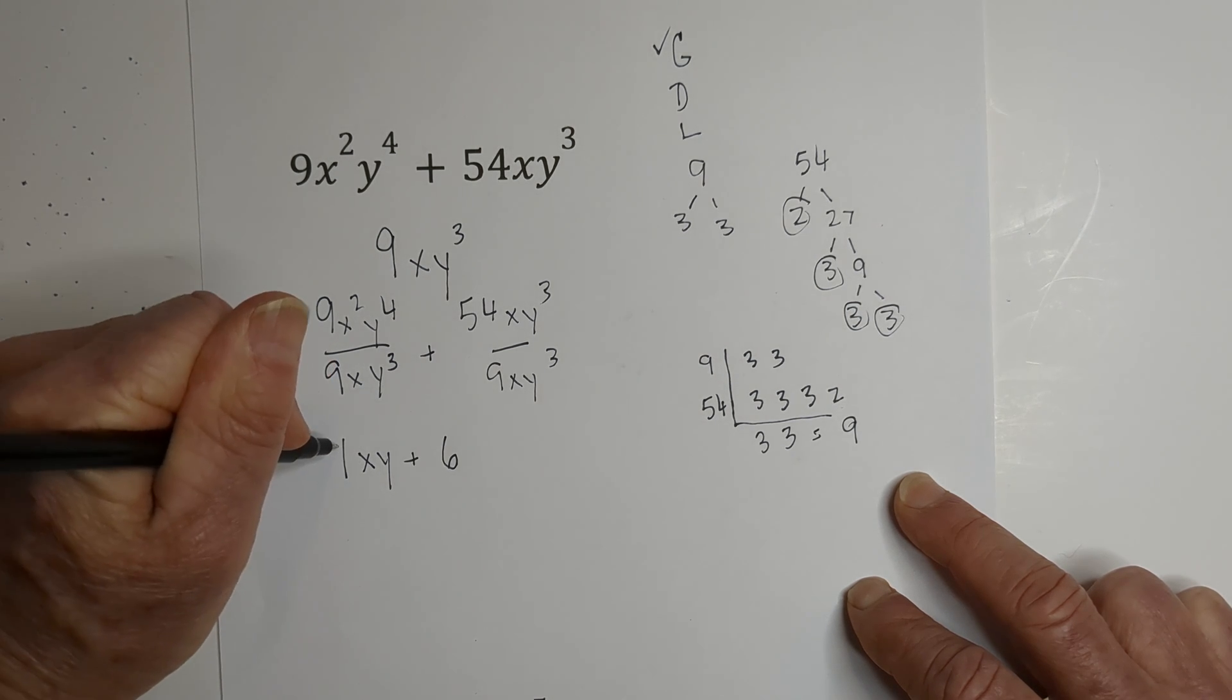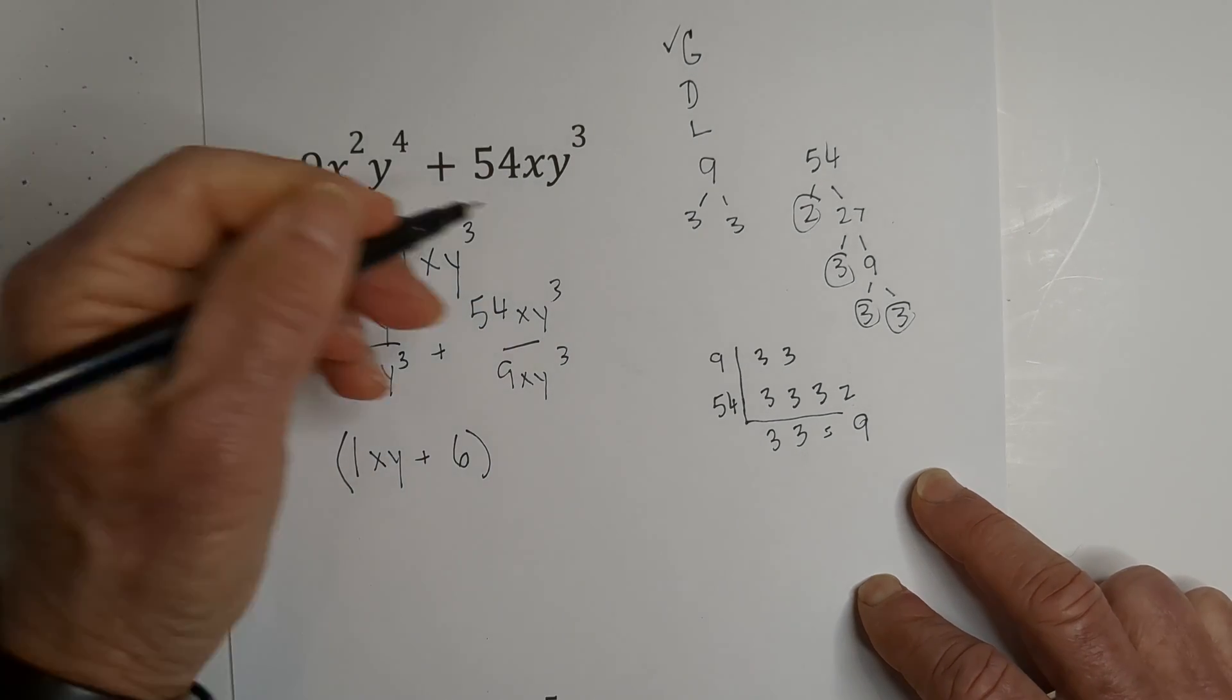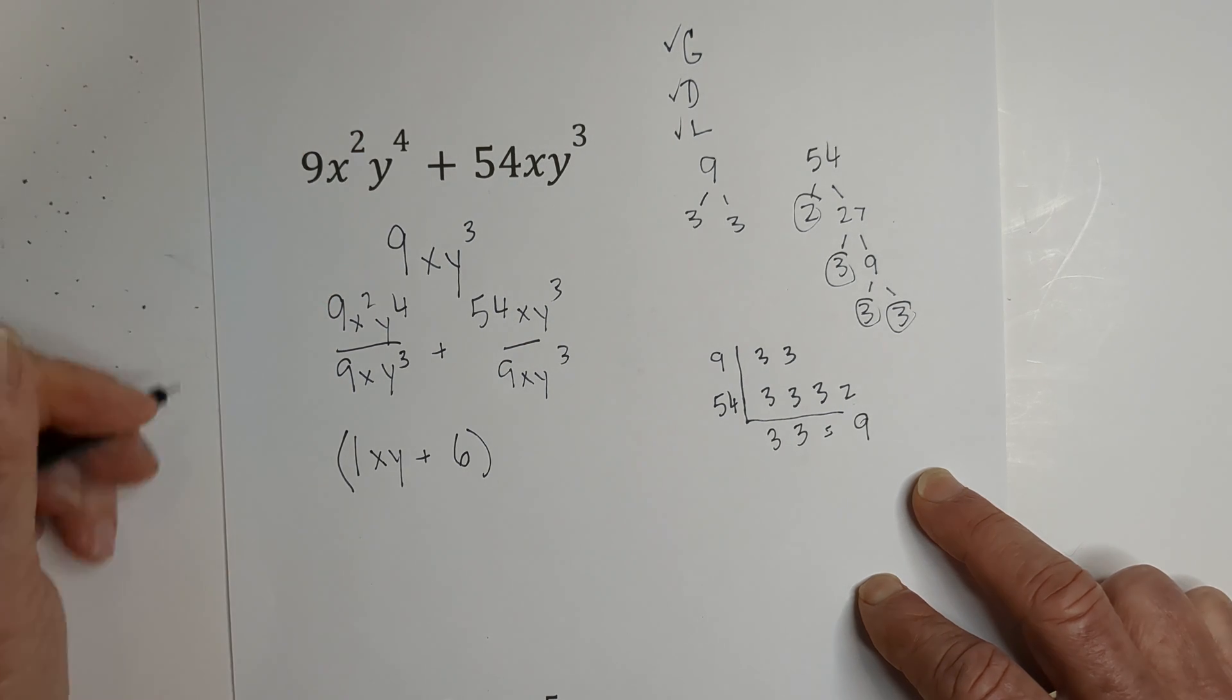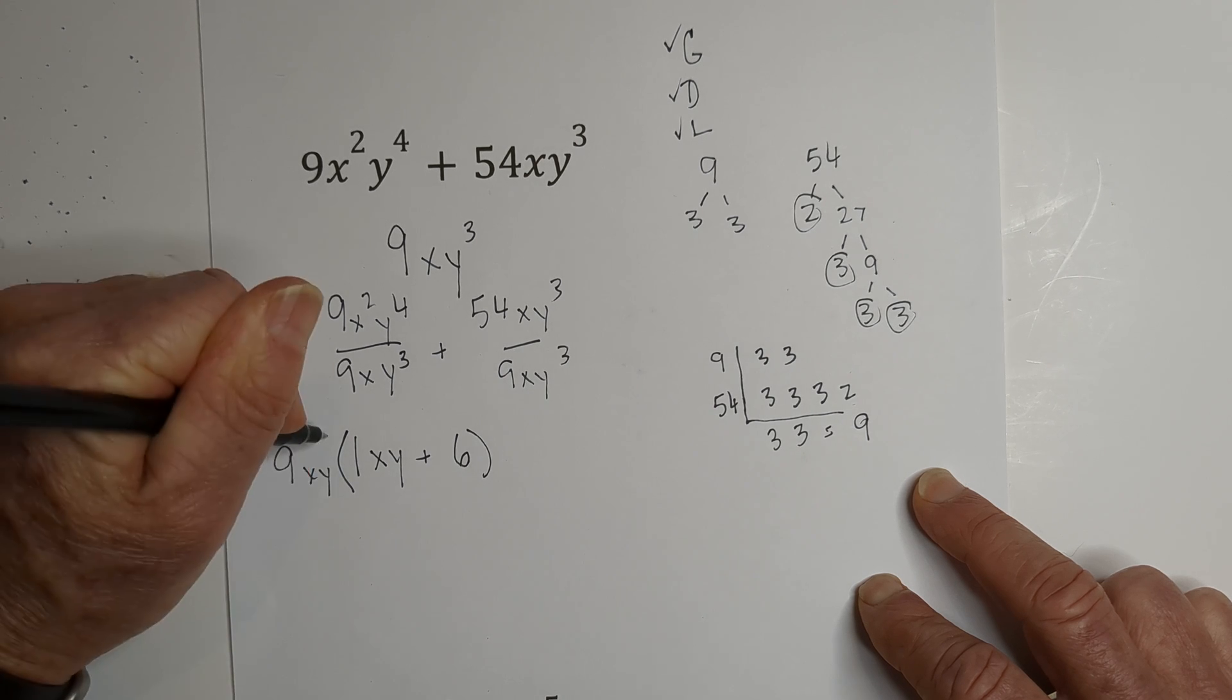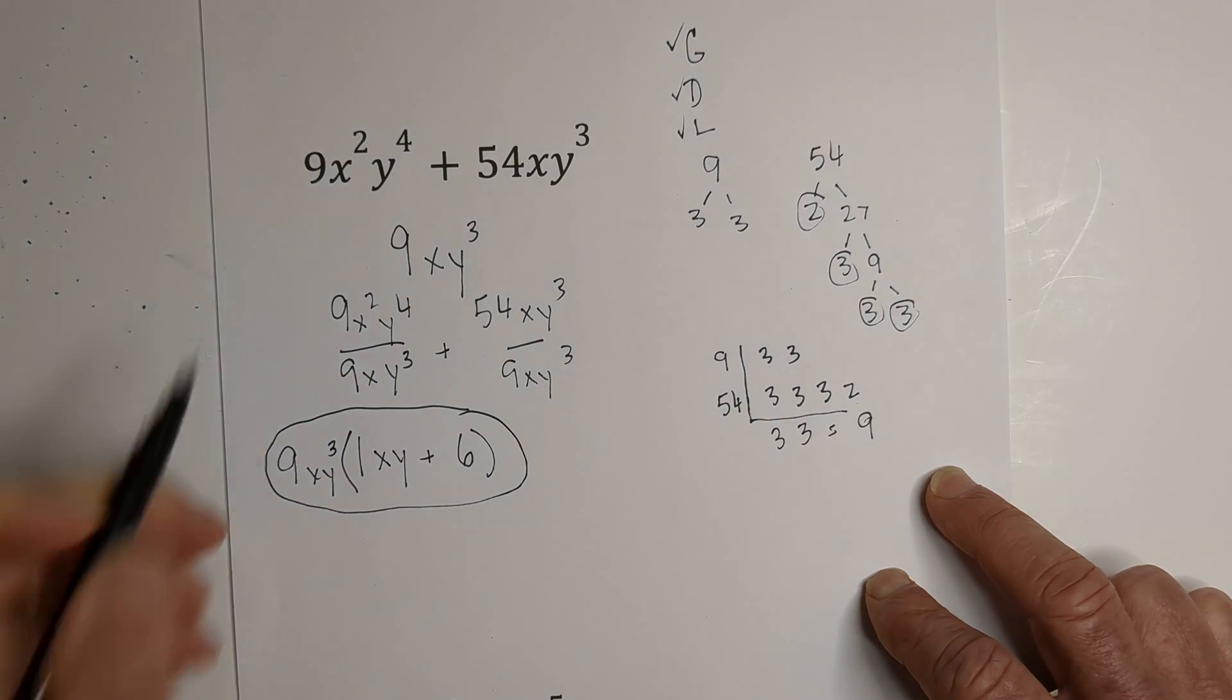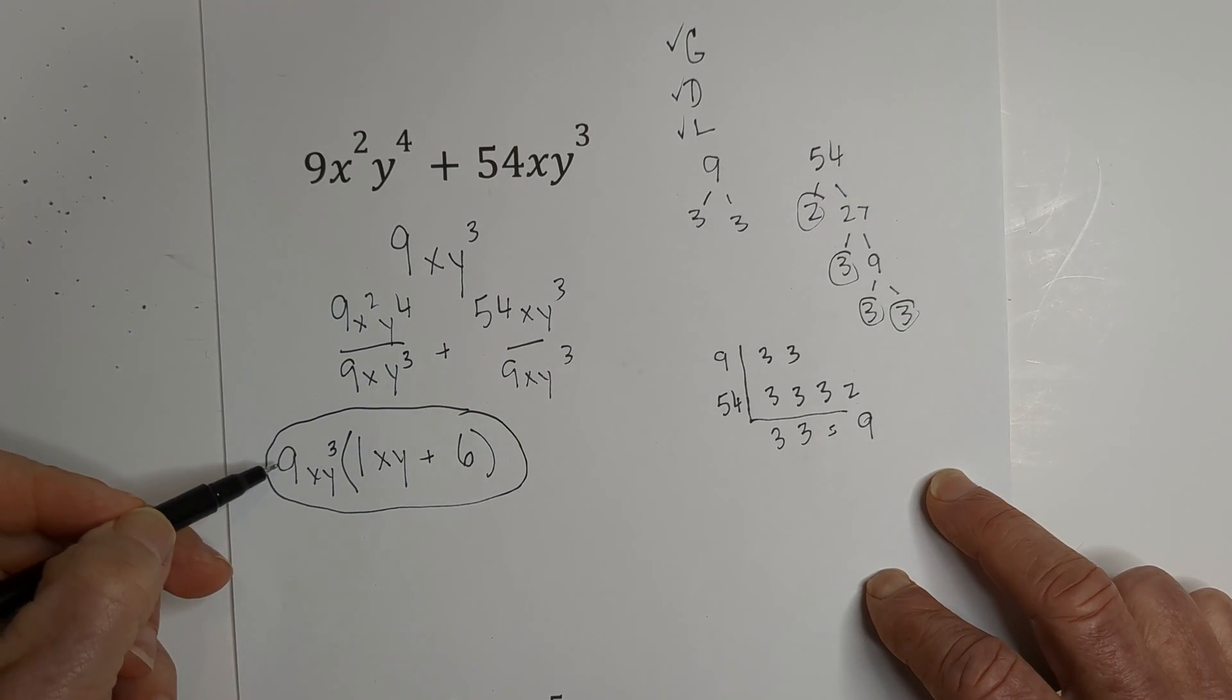Now remember, we've got to lead with our greatest common factor, which is 9xy^3. So here it is factored. This binomial 9x^2y^4 + 54xy^3 factored becomes 9xy^3(xy + 6).